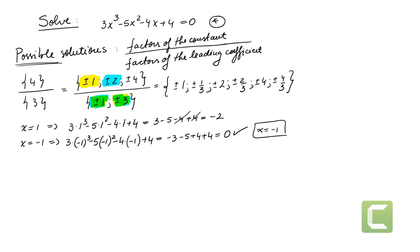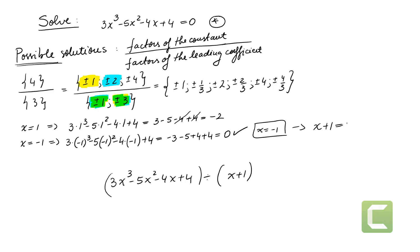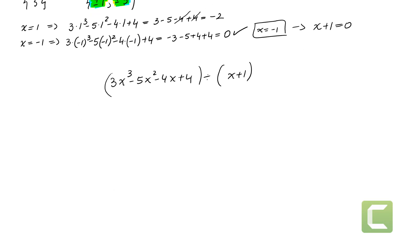Now we are going to divide 3x cubed minus 5x squared minus 4x plus 4 by (x + 1), because if x equals negative 1 is a solution, then x plus 1 equals 0 and it's a factor. There are two ways to divide this: long division and synthetic division. Let's do long division first.